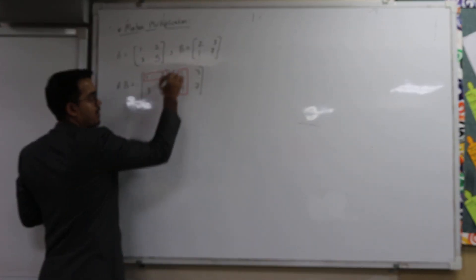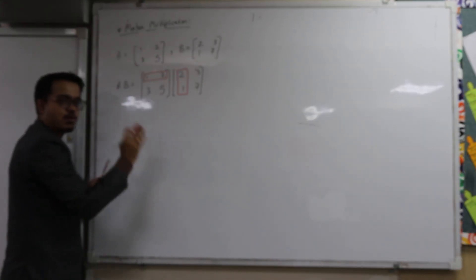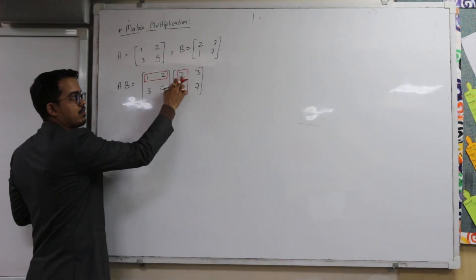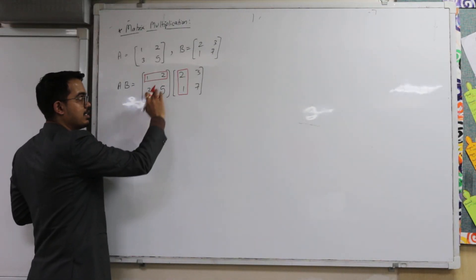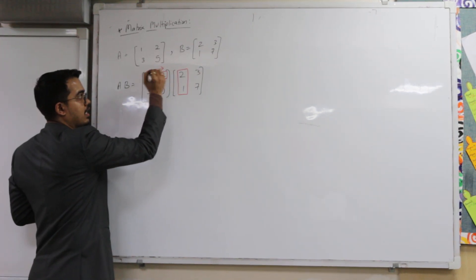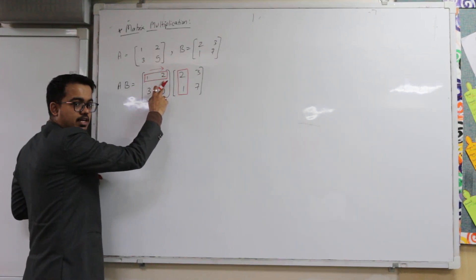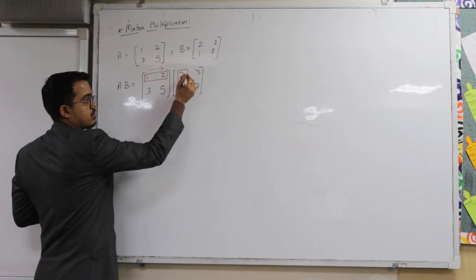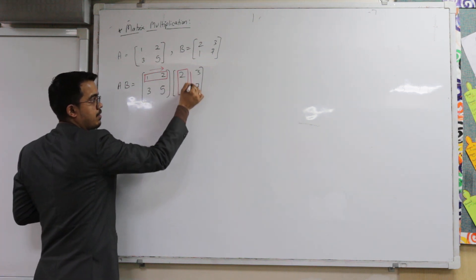If you are doing AB then the result uses A's rows; if you are doing BA then it uses B's rows. The first row is multiplied with the first column, crossing corresponding elements. The first row first element is multiplied with the first column first element. Similarly we will shift towards right — the first row second element is multiplied with the second element of the first column, and we move downwards.